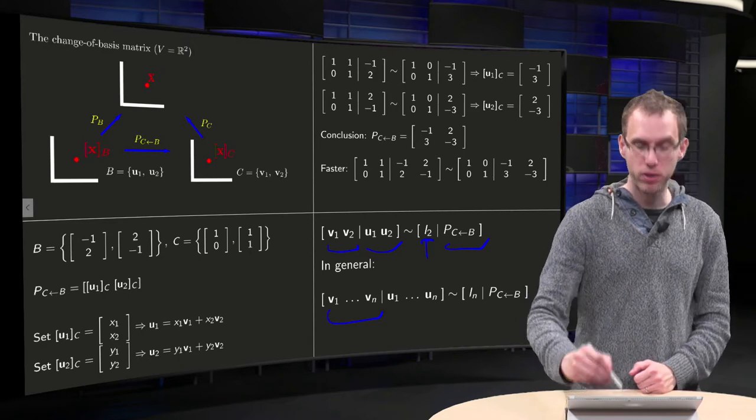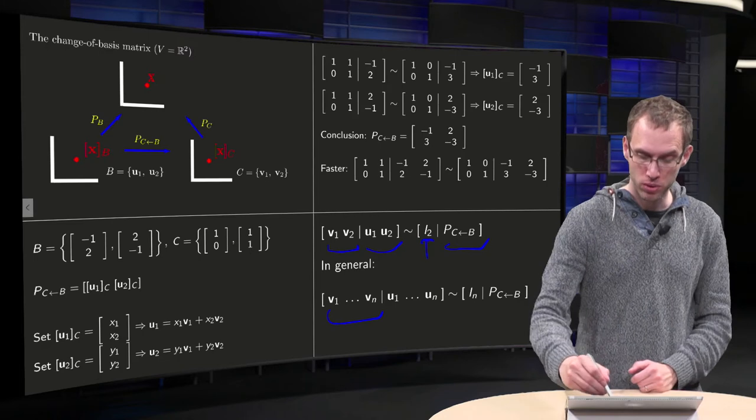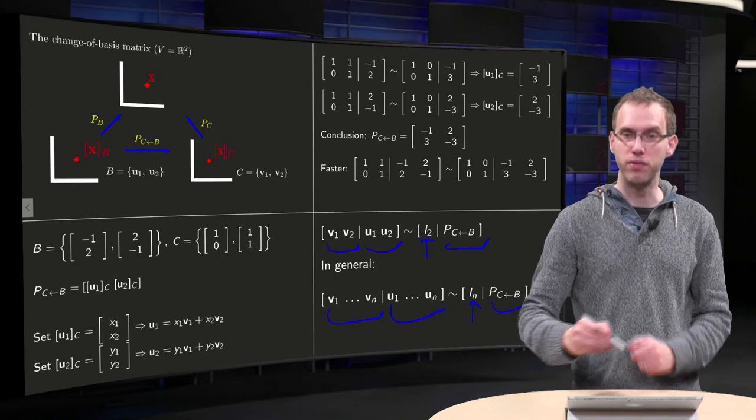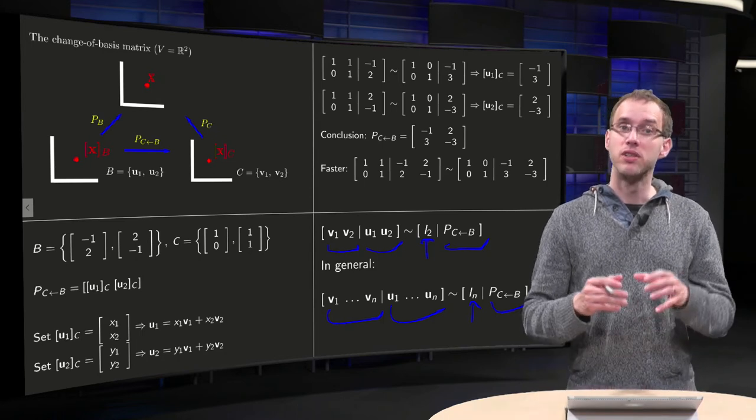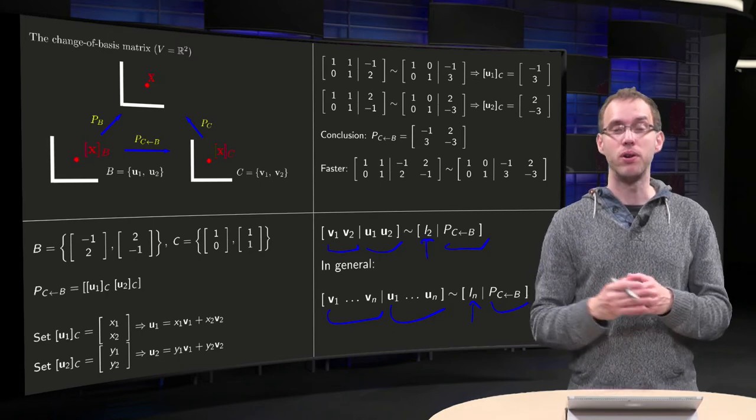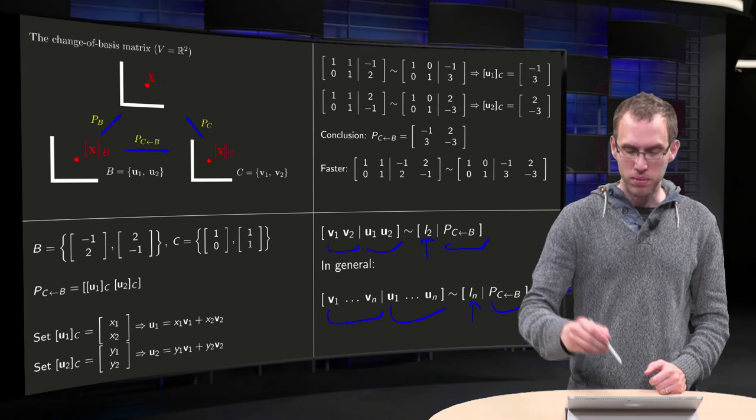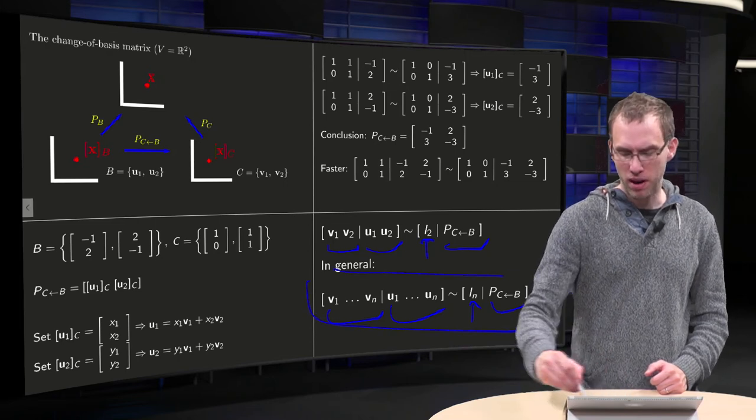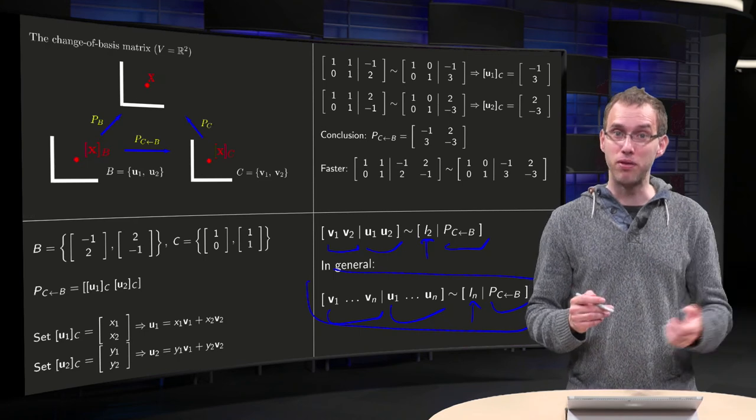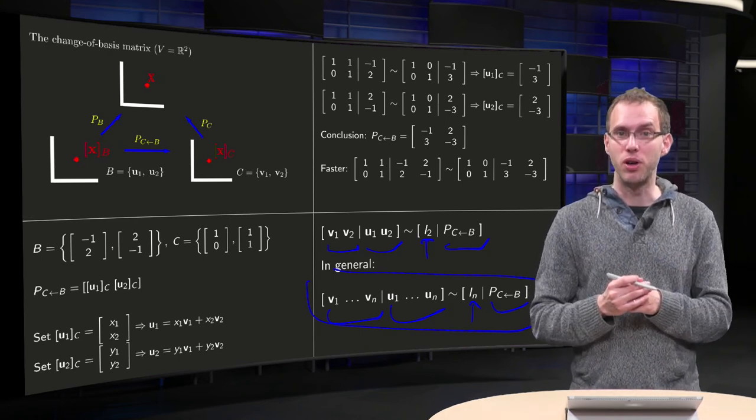You choose your v1 up to vn, you augment them with your basis b, u1 to un, and then after row reduction into your identity matrix here, you have your p from b to c. So that's the general procedure. You can do all the row reduction steps at once. Be careful though, just learning such a formula by heart is kind of dangerous. Try to memorize where it is coming from, so that you understand why you have to do this row reduction.